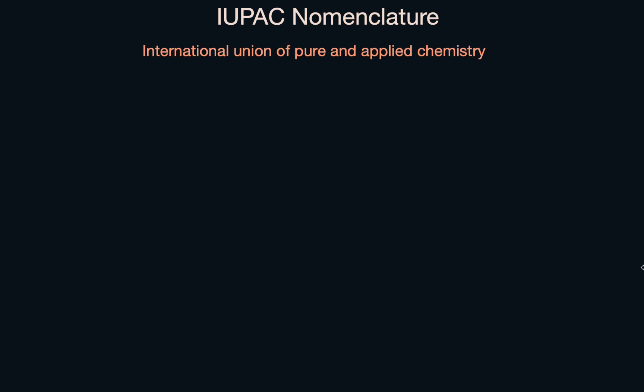In the last video, we saw that due to the limitations of the trivial system, a union of scientists gathered together to introduce a new system called the IUPAC system. It stands for International Union of Pure and Applied Chemistry. With this system, if I give you any organic compound, you will be able to name it. Not only that, if I give you the name of a compound, you will be able to draw its structure. So let's see how we name organic compounds based on this system.